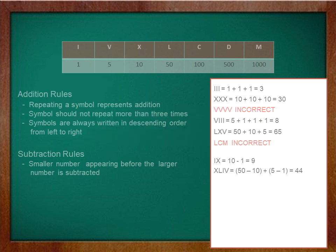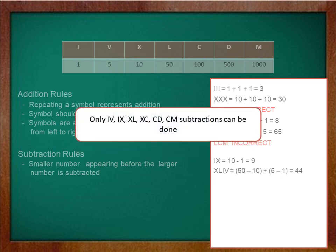Next rule is continuation of the previous rules. Only IV, IX, XL, XC, CD, CM subtractions are allowed. If you look carefully, we are subtracting I, X, and C from two consecutive greater numbers. So I can be subtracted from 5 and 10, 10 from 50 and 100, and 100 from 500 and 1000.